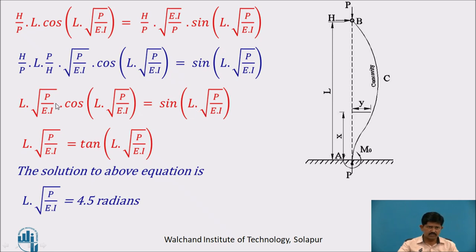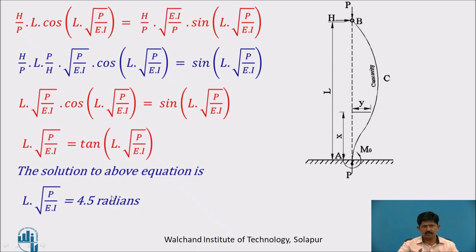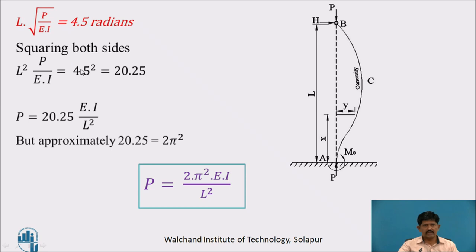The solution of this transcendental equation gives tan value equal to the argument at 4.5 radians, so L√(P/EI) = 4.5. Squaring both sides: L²P/EI = 4.5² = 20.25. Since 20.25 ≈ 2π², substituting gives P = 2π²EI/L², which is the crippling load for a column fixed at one end and hinged at the other.